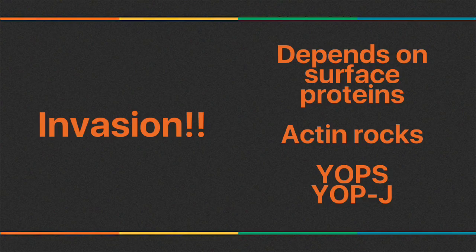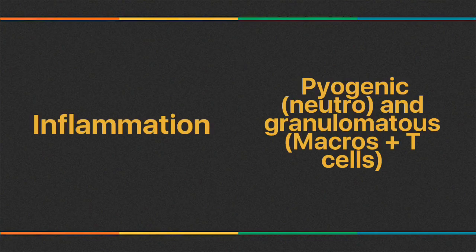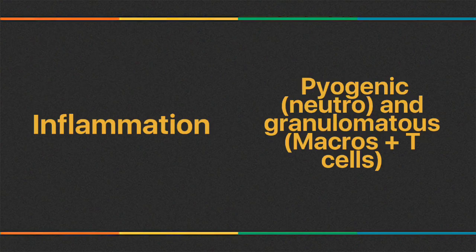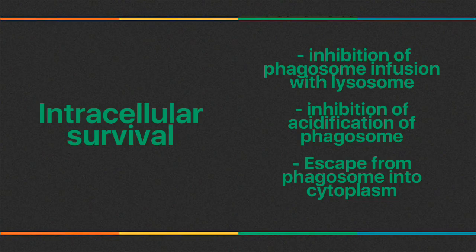TNF stands for tumor necrosis factor. There are two types of inflammation: pyogenic, where neutrophils predominate, and granulomatous, where macrophages and T cells predominate. Most gram-positive and gram-negative cocci cause pyogenic inflammation. Mycobacterium tuberculosis is a good example of a cause of granulomatous inflammation, where bacterial antigens activate cell-mediated immunity leading to sensitized T cells and macrophages.